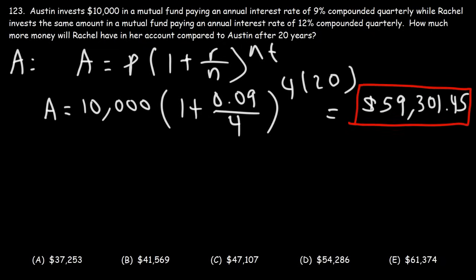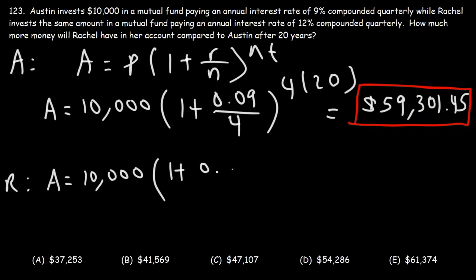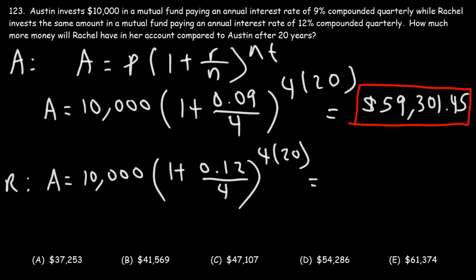Now let's see how much Rachel is going to have in her account. The principal is still the same; the only difference is the interest rate. Instead of 9%, it's now 12%, which is 0.12 as a decimal. Her account is still compounded quarterly, the same as Austin. So she's going to have $106,408.91.